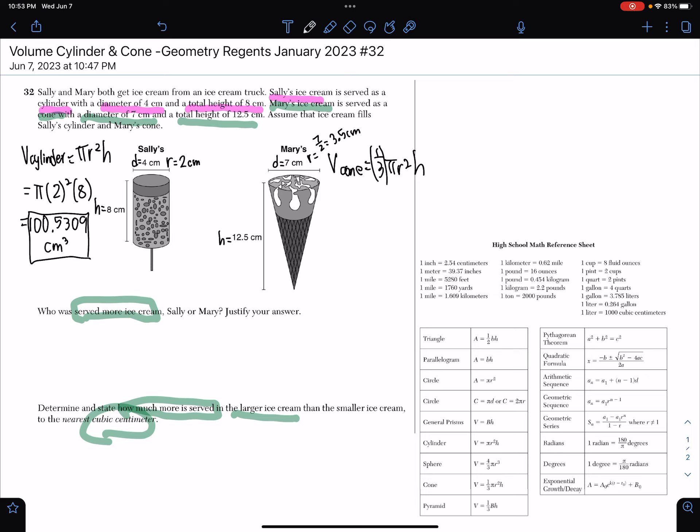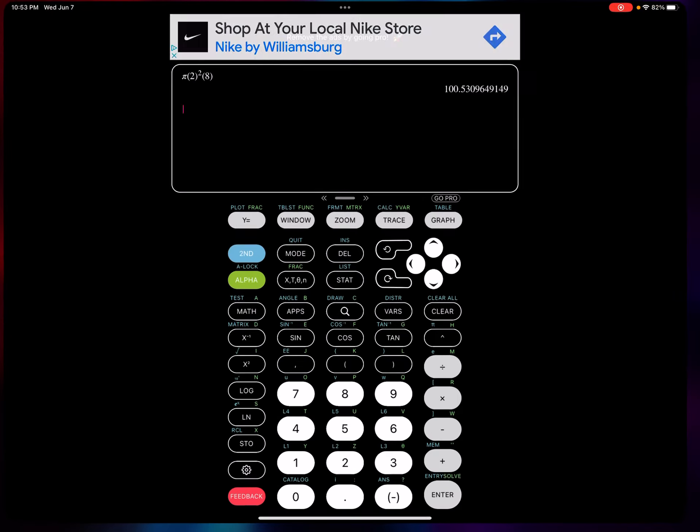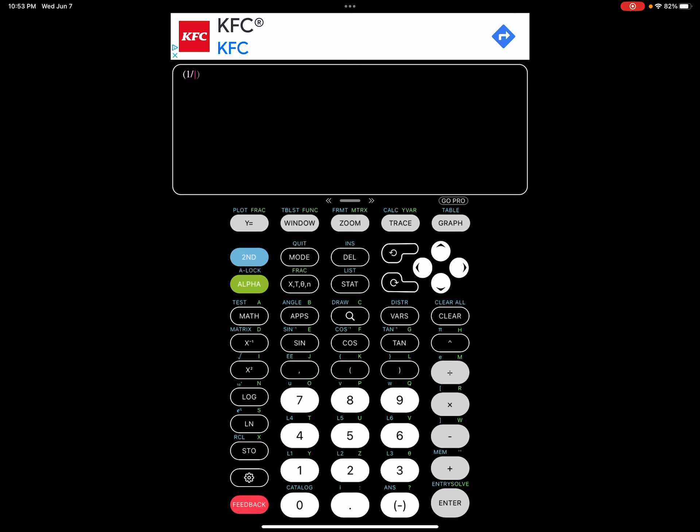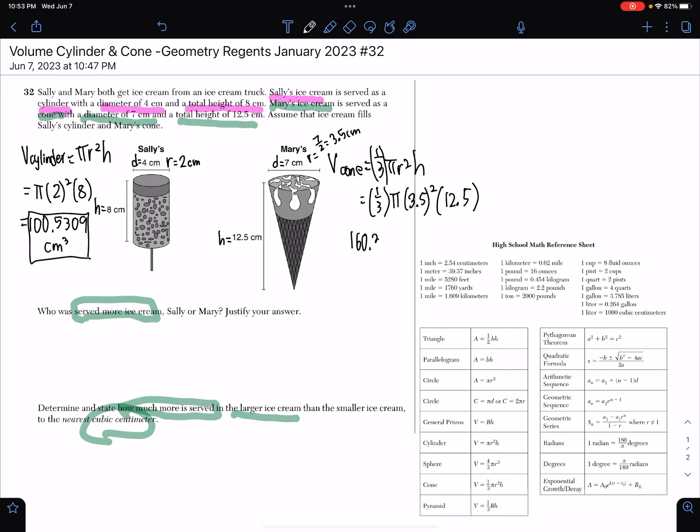Now let's do the same thing for Mary. For Mary's information we're going to plug into the formula (1/3) times π, the radius was 3.5 so we square that, and then we had a height of 12.5. When we put that in the calculator, keep in mind you put parentheses 1 divided by 3 for the fraction, then 2nd caret for π, then 3.5 squared, then times 12.5. When we put this all in the calculator we get 160.3521 cubic centimeters of ice cream.